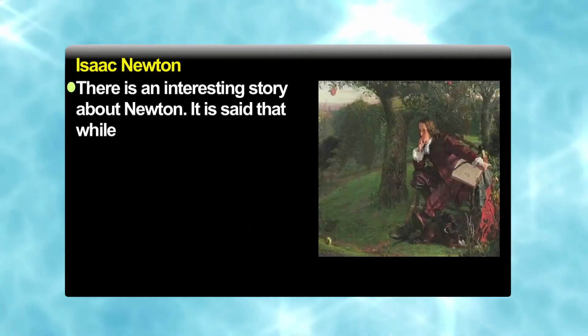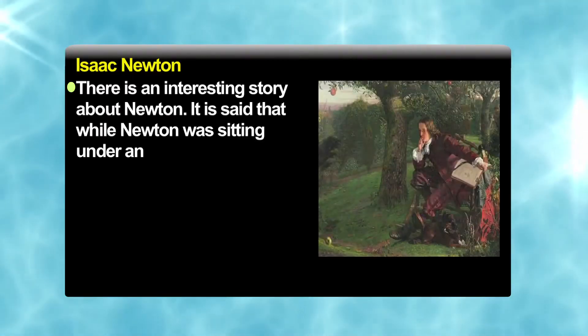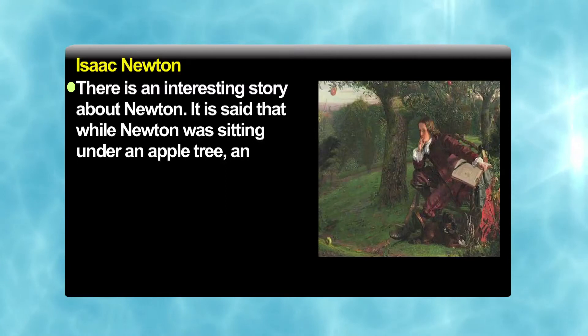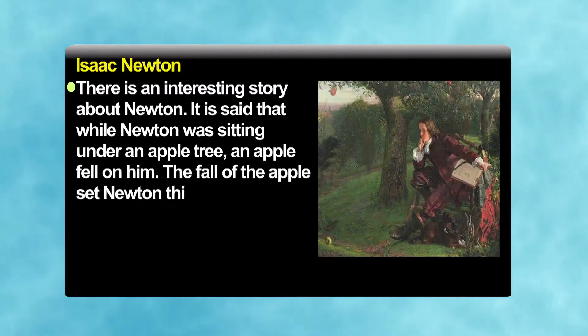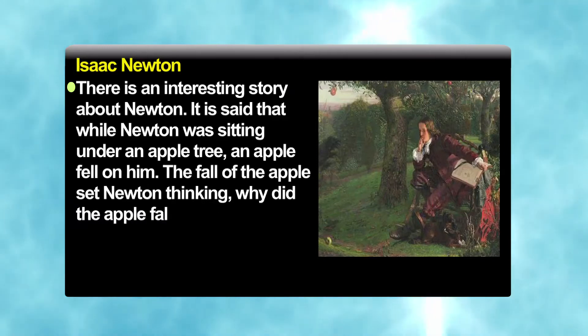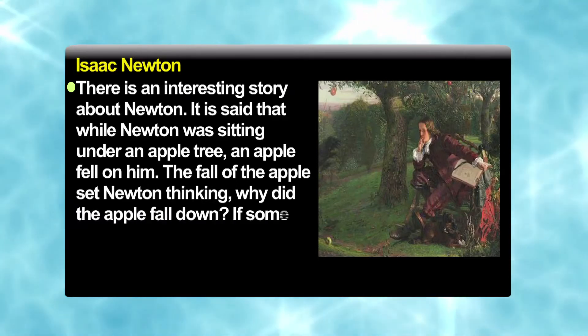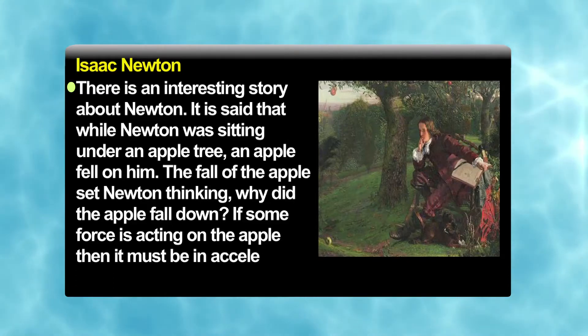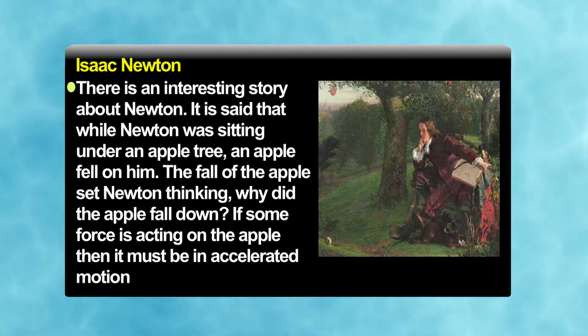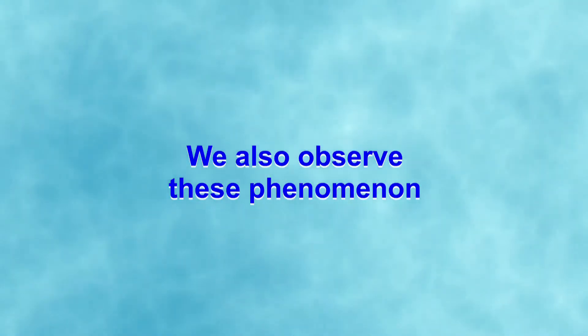There is an interesting story about Newton. It is said that while Newton was sitting under an apple tree, an apple fell on him. The fall of the apple set Newton thinking: why did the apple fall down? If some force is acting on the apple, then it must be in accelerated motion.